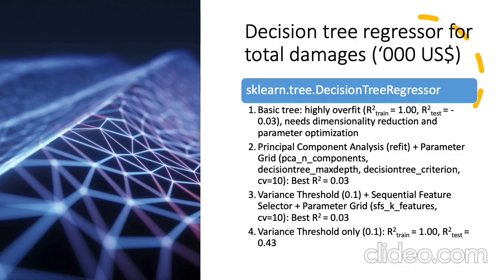The first algorithm we looked at is decision tree regressors for total damages. We use a regressor rather than a classifier because total damages are a continuous variable, using scikit-learn's decision tree regressor. Starting with a basic tree, we found it was highly overfit — the training R-squared was 1.0, meaning it perfectly fits the training data, but the test value was negative 0.03. So we needed some dimensionality reduction and parameter optimization.